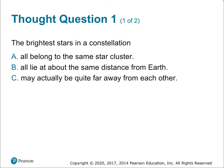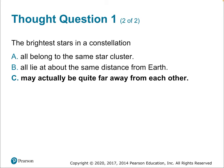Thought question one: the brightest stars in a constellation are what? The answer is C — they actually might be very far from each other and have nothing in common. They're simply the brightest stars as seen from Earth. On another planet, in another part of the galaxy, they would not necessarily be the brightest stars, nor would they appear together.